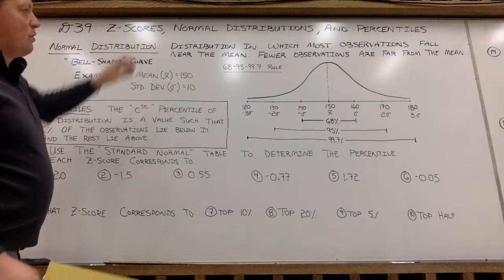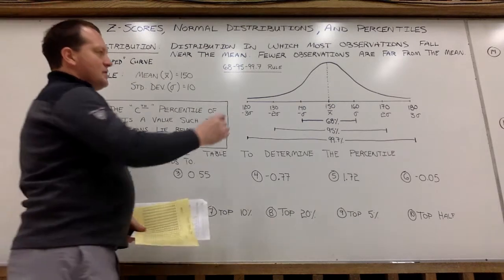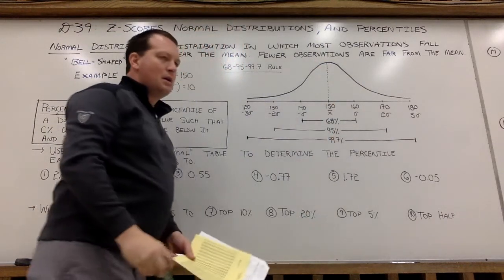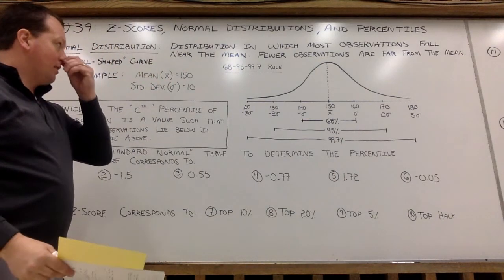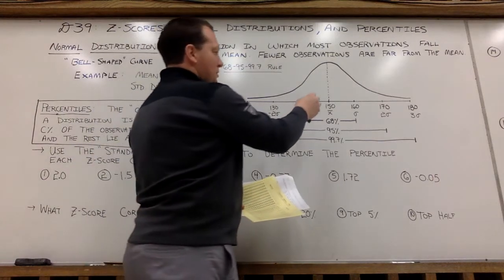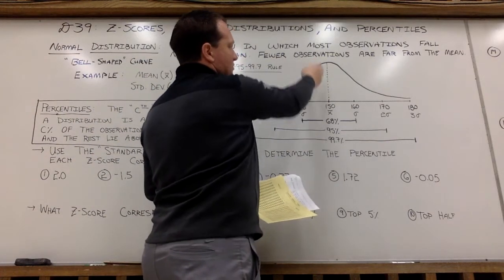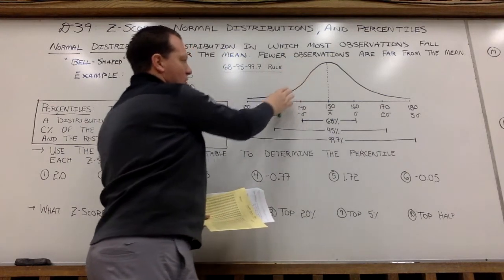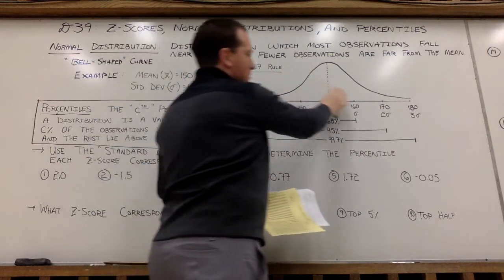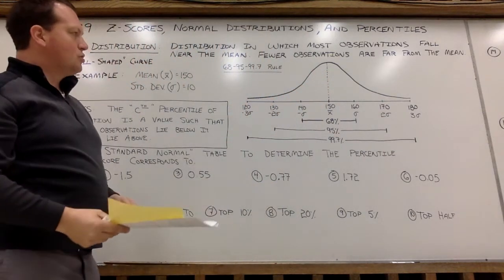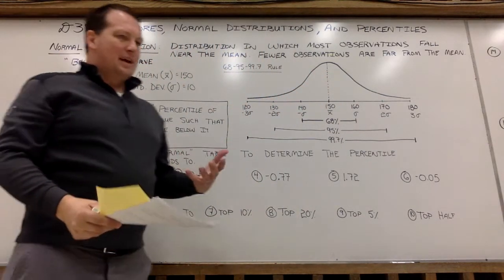So the big kahuna here, what we're looking at today, are what we call normal distributions. These are bell-shaped curves. If I were to list all observations here within a data set, the data would be distributed with most values near the mean and fewer and fewer values far away from the mean, both above and below.